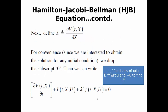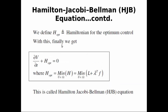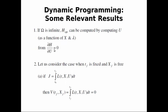We drop the zero subscript for convenience since we want the solution for any initial condition. The Hamilton-Jacobi-Bellman equation can be written with λ = ∂V/∂x, and ∂V/∂t is the optimal cost function as a function of time and x. The Hamiltonian for optimal control is H = L + λᵀf, and the full HJB equation sets ∂V/∂t + H = 0.